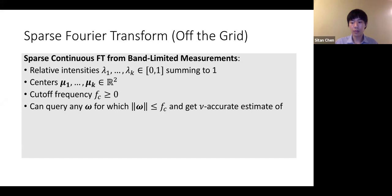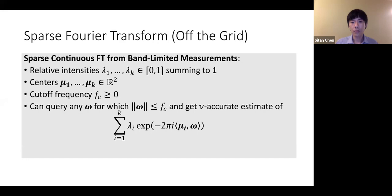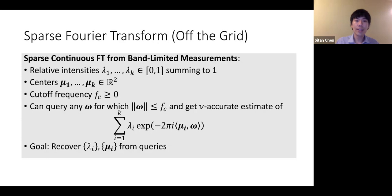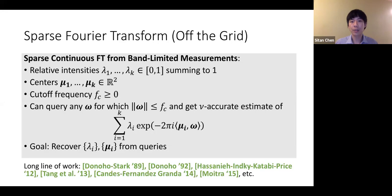For any frequency ω in 2D with norm at most the cutoff frequency, I get a noisy estimate of the Fourier transform of the spike train evaluated at frequency ω. My goal is just from such queries to recover the relative intensities and centers. On one hand we have this sparse recovery question, on the other we have the mixture model question of learning the parameters of a mixture of Airy disks. This particular problem of sparse continuous Fourier transform has a long line of study dating back to the work of Donoho and Stark.